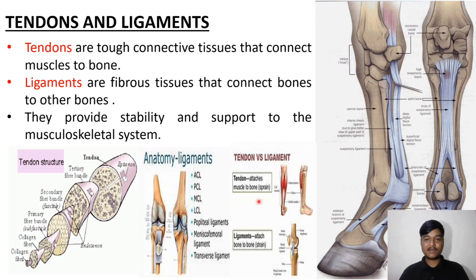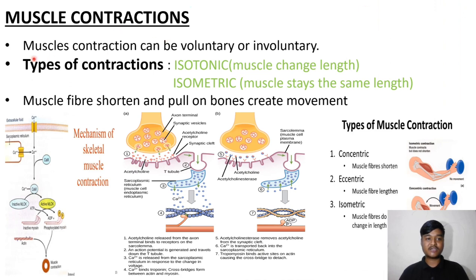Muscle contraction can be voluntary or involuntary. Types of contraction: isotonic — where muscles change in length — and isometric — where muscles stay at the same length. Muscle fibers shorten and pull on the bone to create movement. You can observe the mechanism of skeletal muscle contraction in the image.